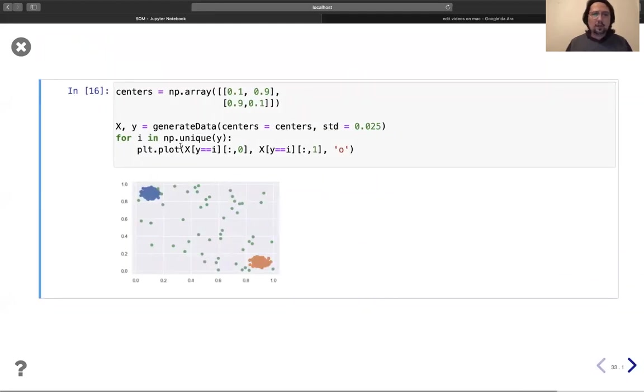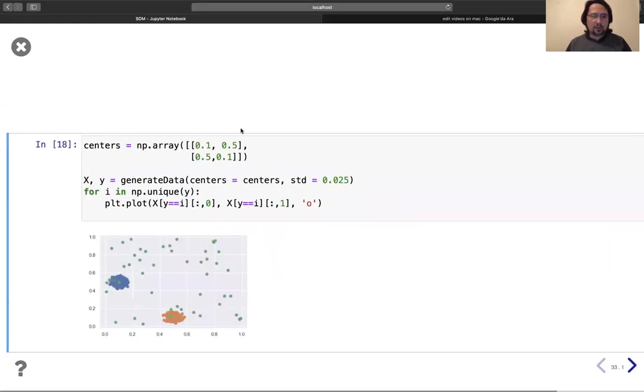Now we can... so this is, for example, you have two centers here. Let's change a little bit. For example, let's make it 0.5 and this is also 0.5.